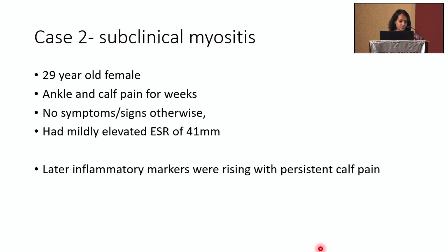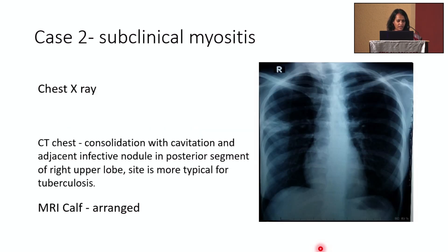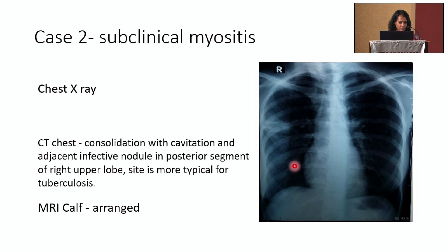Because of this persistent pain, she was repeatedly investigated and later found to have rising inflammatory markers, prompting second-line investigation as her CRP rose to around 70-80. By that time, a chest X-ray showed cavitation in the right lung field, further evaluated with CT chest which showed consolidation with cavitation. The first differential diagnosis was TB in this endemic country — she was a healthcare worker — so there was no doubt about TB at first instance. However, while investigating to exclude TB, we also arranged an MRI of the calf, because TB alone couldn't explain why she was limping.